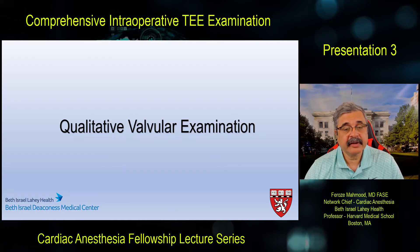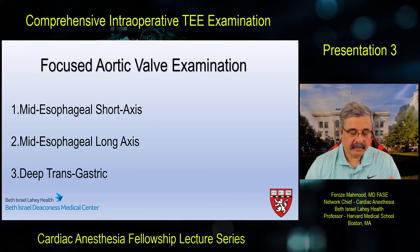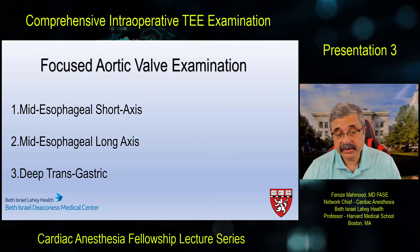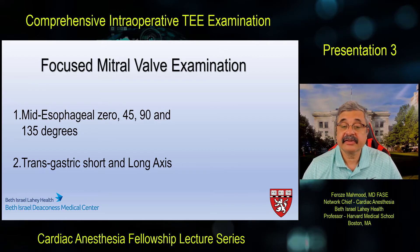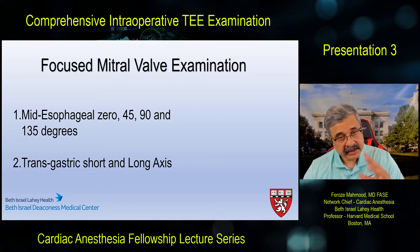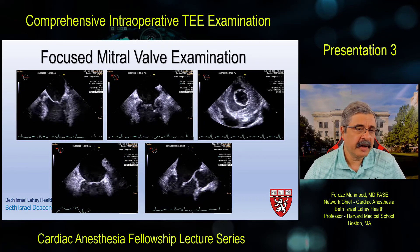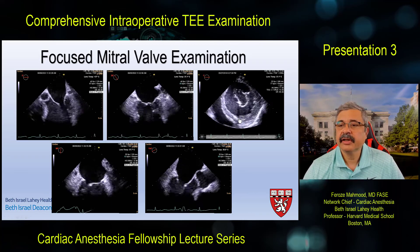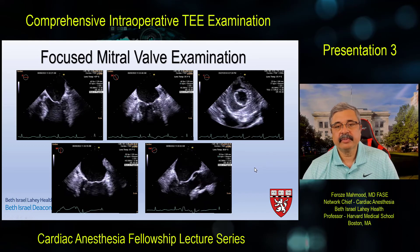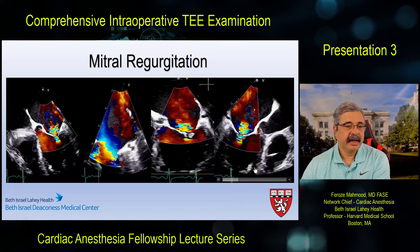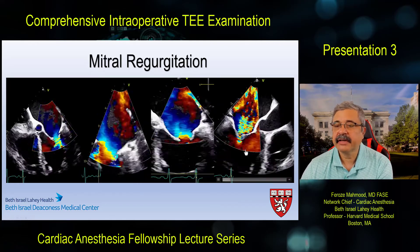The qualitative valvular examination covers aortic valve, mitral valve, and tricuspid valve. The focused aortic valve examination uses the mid-esophageal aortic valve short-axis view, mid-esophageal long-axis view, and the deep transgastric window. The focused mitral valve examination uses mid-esophageal 0, 45, 90, and 135 degrees and the transgastric short and long axis. For mitral valve: 0 degrees, 40-degree transcommissural, mid-esophageal 90 degrees, mid-esophageal long axis, and transgastric basal short axis showing the fish-mouth view.